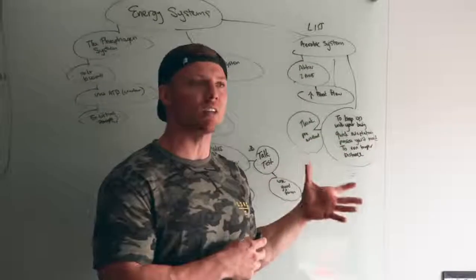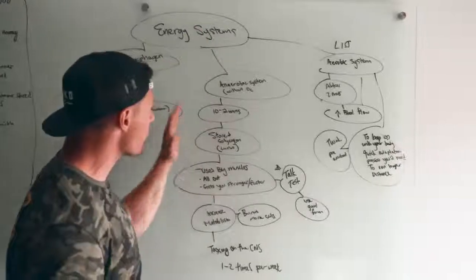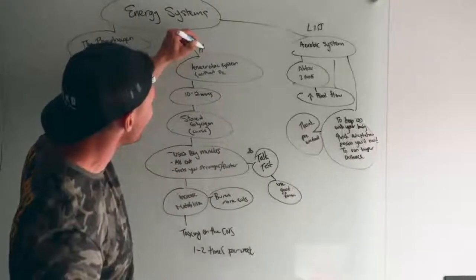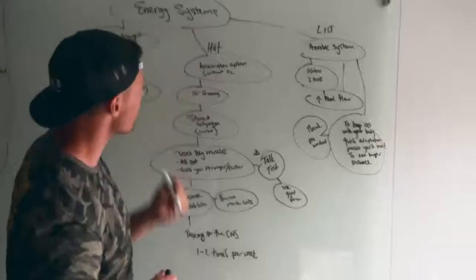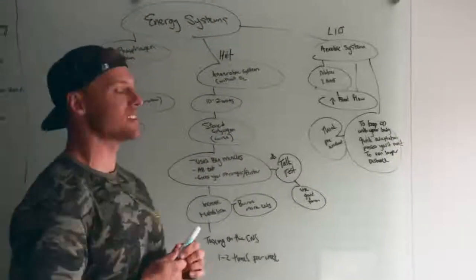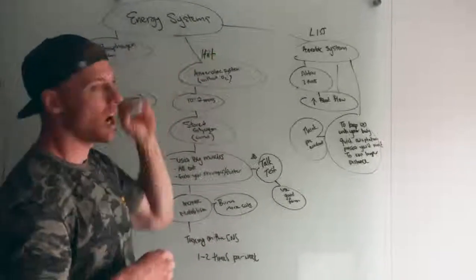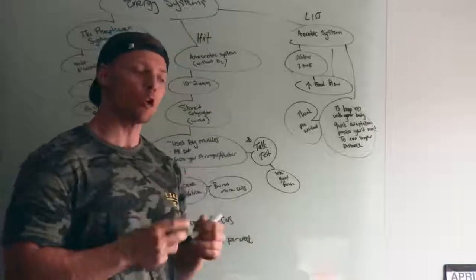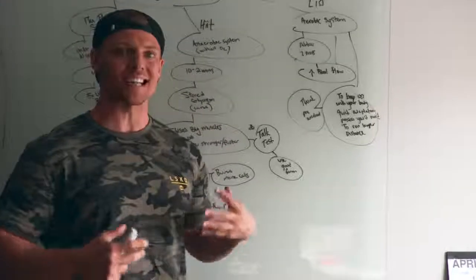You should also incorporate this: HIIT, high intensity interval training. This is an anaerobic system, so that means without oxygen, without O2. Your body's actually using glycogen. Glycogen is like NOS for our bodies, glycogen is carbohydrate.